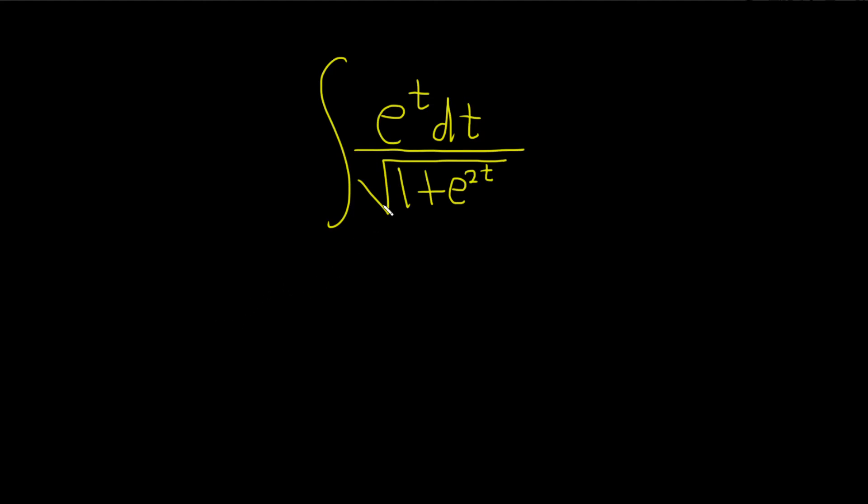In this problem, we're going to integrate e to the t over the square root of 1 plus e to the 2t.